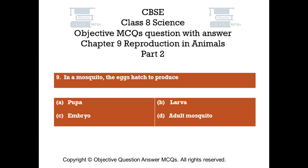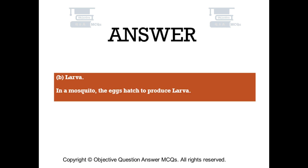Question number 9. In a mosquito, the eggs hatch to produce. Option A: Pupa. Option B: Larva. Option C: Embryo. Option D: Adult mosquito. The right answer is Option B: Larva. In a mosquito, the eggs hatch to produce larva.